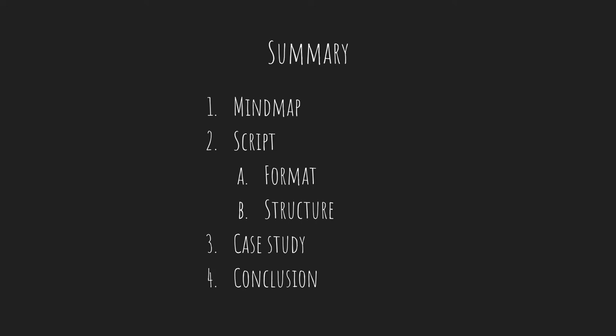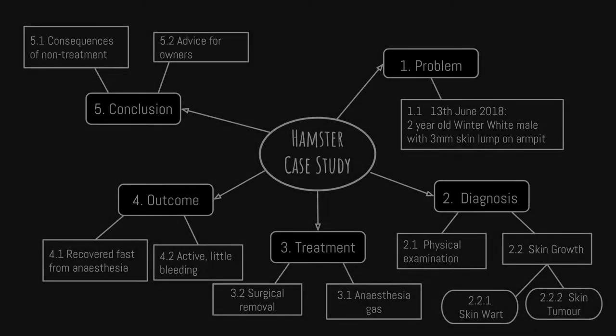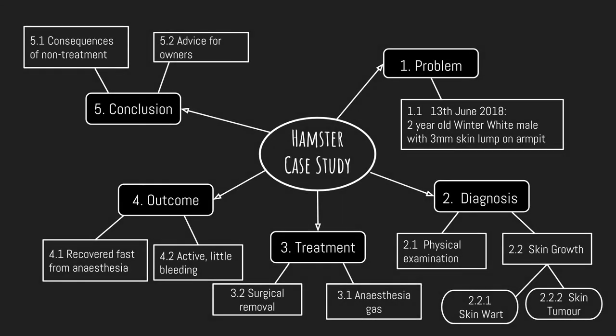Here is a summary of what we are going to cover. The example is a hamster with skin growth. In the mind map you draw during the planning process, please ensure that you use different geometric boxes or colours to represent your heading, subheading and details respectively.